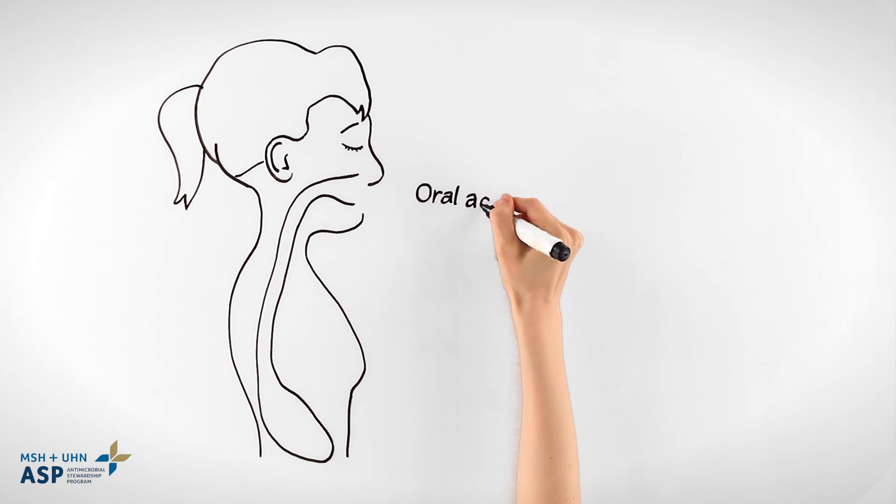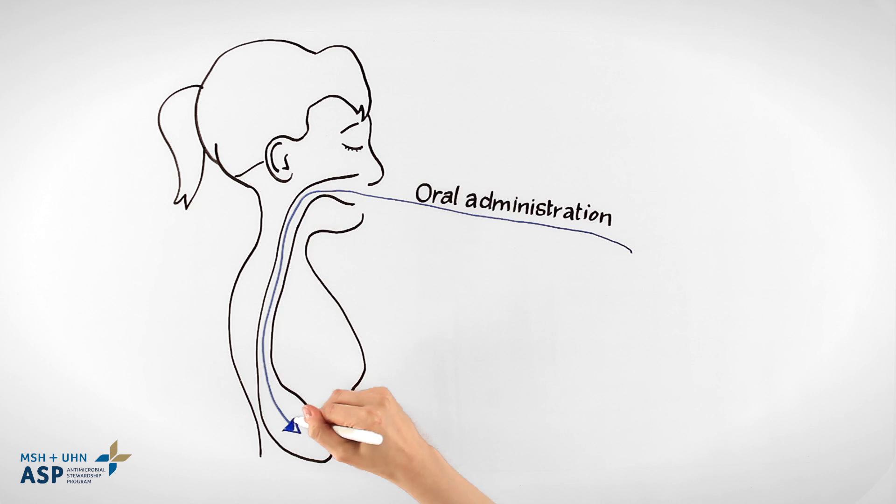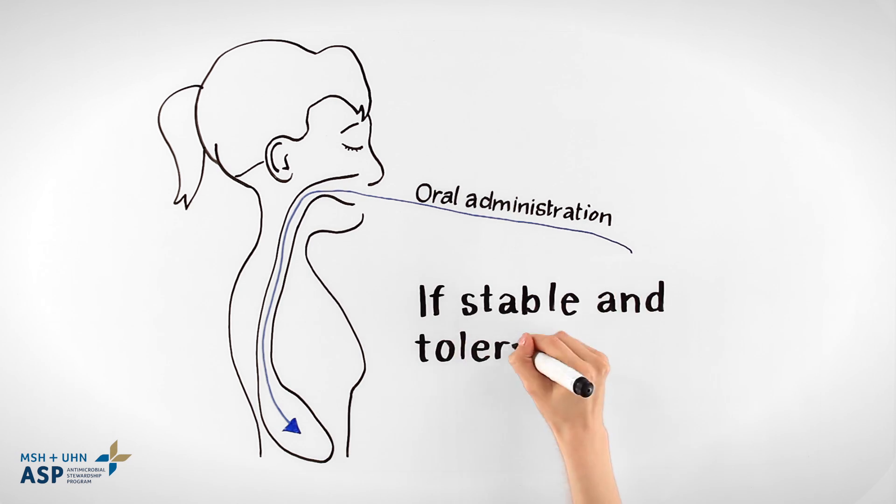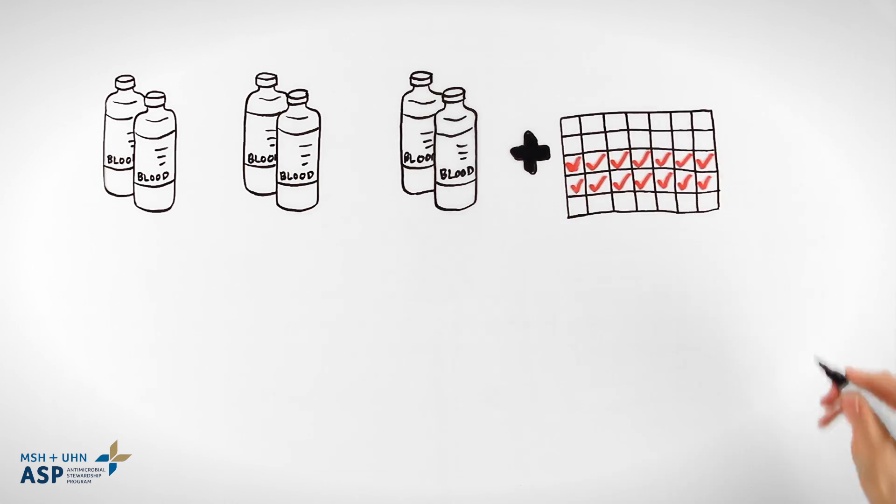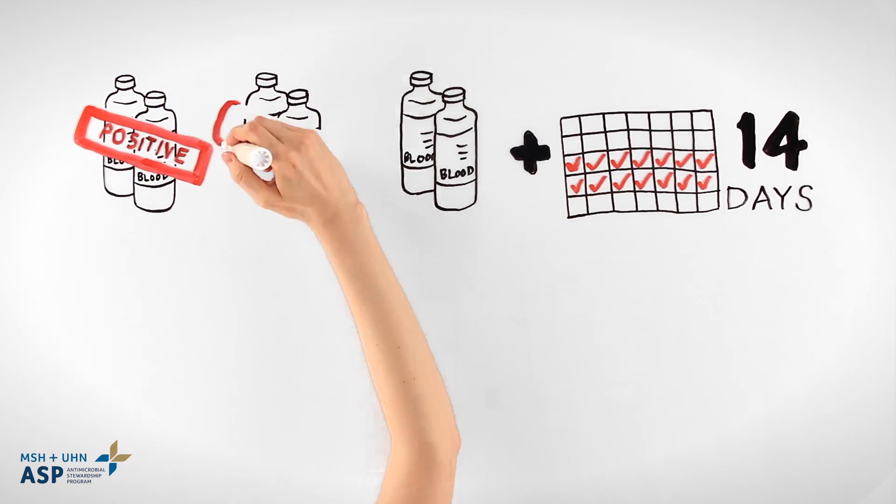Oral or via feeding tube administration of fluconazole is an option for patients who are stable and tolerating feeds. Repeat blood cultures must be sent, as duration of treatment is usually 14 days from the first negative blood culture.